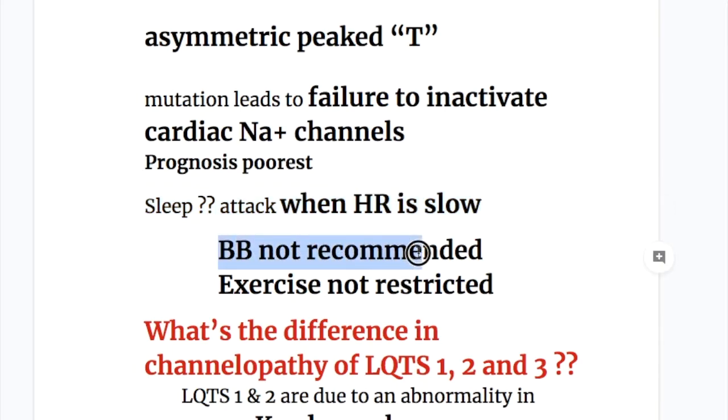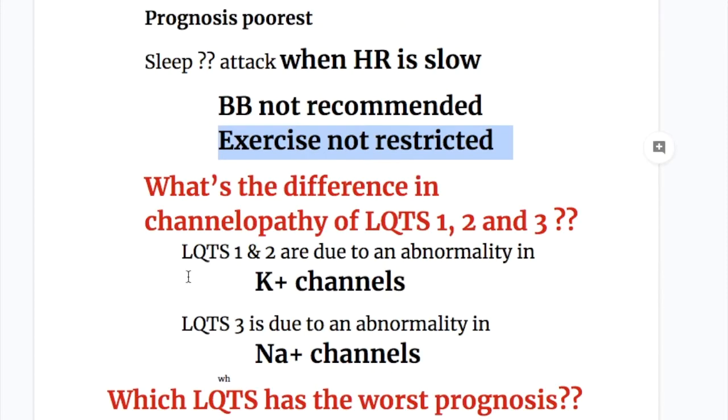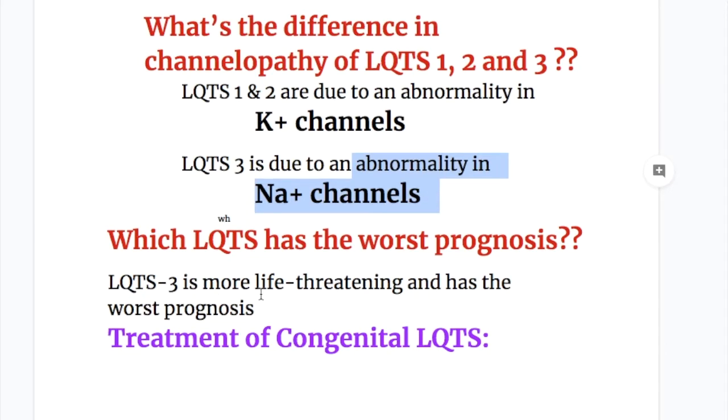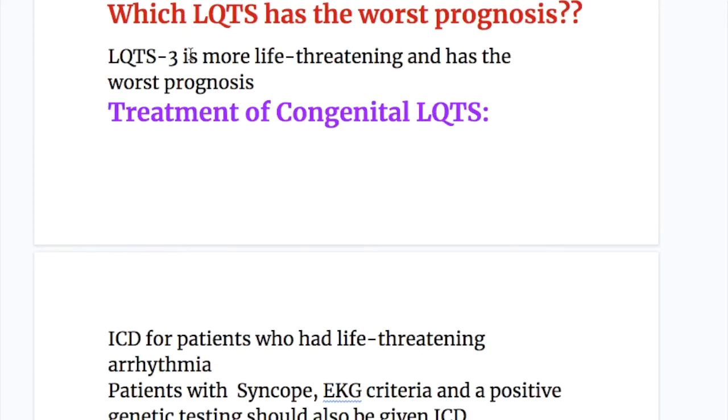Beta blockers are symptomatic treatment for LQT 1 and 2, but here beta blockers do not work. Exercise is not restricted in LQT 3, whereas exercise is restricted in LQT 1. What's the difference in channelopathy of LQT 1, 2 and 3? LQT 1 and 2 are due to an abnormality in potassium channels, whereas LQT 3 is due to abnormality in sodium channels. Which LQT has the worst prognosis? LQT 3 is more life-threatening and has the worst prognosis.